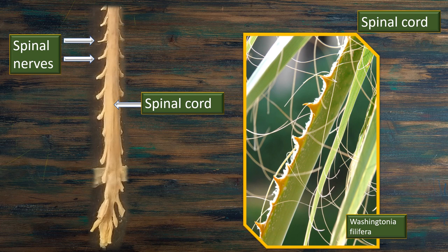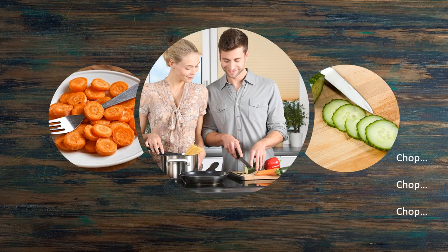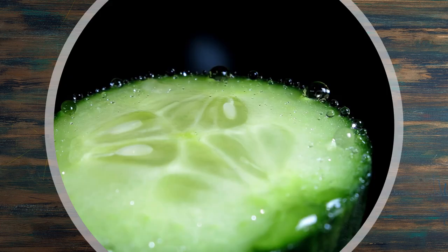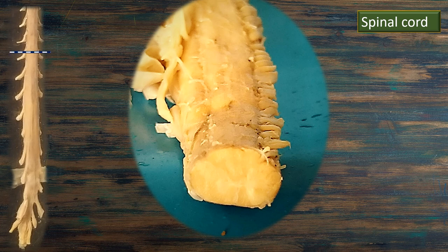Next, this looks like a particular plant called the desert palm, also known as the Washingtonia filifera. The spinous projections resemble the spinal nerves and the central green part resembles the spinal cord — it is just a passing comparison. But when you do this chop, chop, chop of the spinal cord, we are going to see this cord in cross section. That's the cucumber in cross section. Keeping that in mind, this is how the spinal cord cross section looks like.